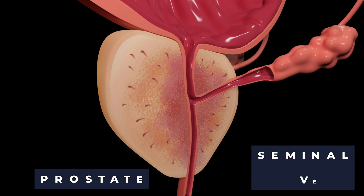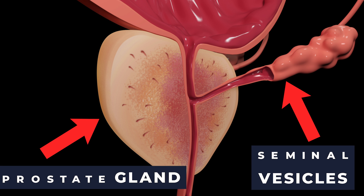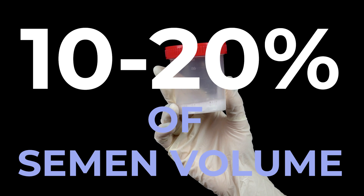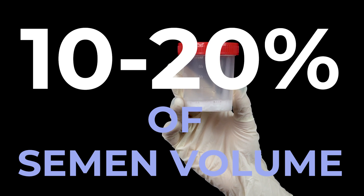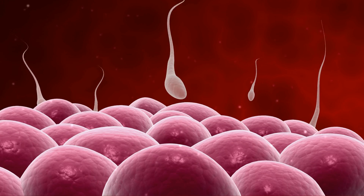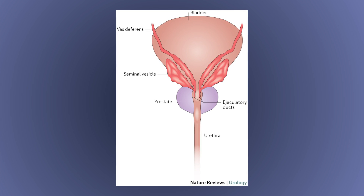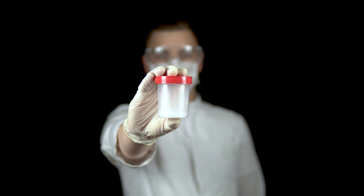The prostate gland is a walnut-shaped organ that sits behind the bladder and also produces fluid released during ejaculation. This forms about 10 to 20% of the ejaculated fluid and includes substances that help sperm move better so they can reach the egg. The seminal vesicles and vas deferens link into the ejaculatory ducts, which are a passageway for seminal fluid, prostate fluid, and sperm to combine and form semen.